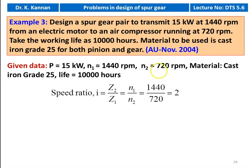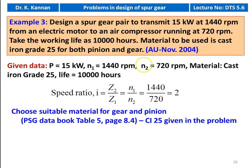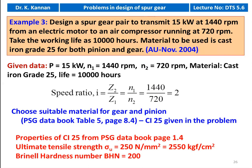First we calculate the speed ratio. Speed ratio I = Z2/Z1 = pinion speed / gear speed = 1440 / 720 = 2. We choose the material for gear and pinion. It is given as cast iron grade 25, and we take the properties from the PSG data book page number 1.4. Ultimate tensile strength = 250 N/mm² = 2550 kgf/cm², Brinell hardness number BHN = 200.